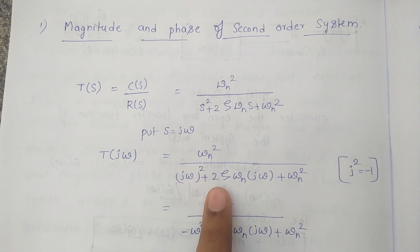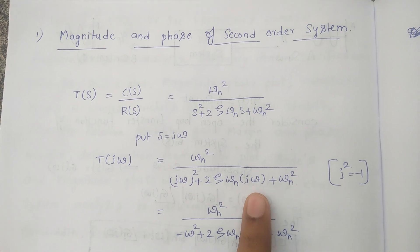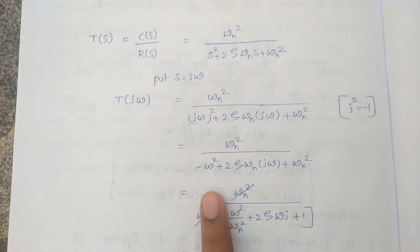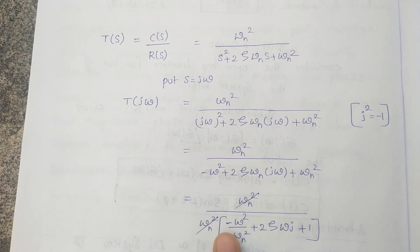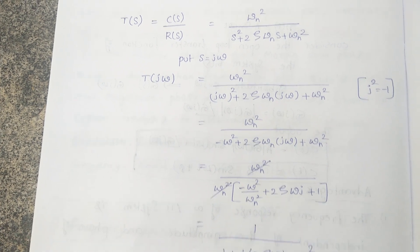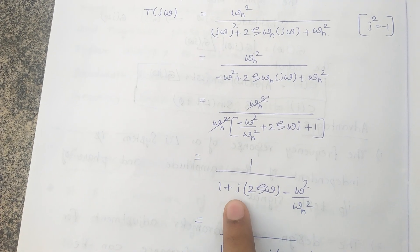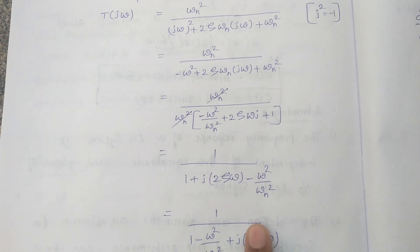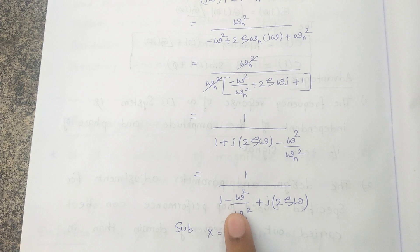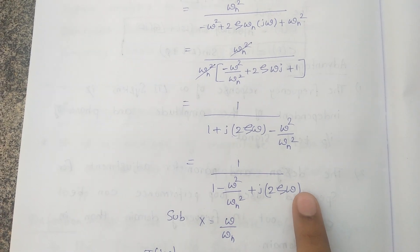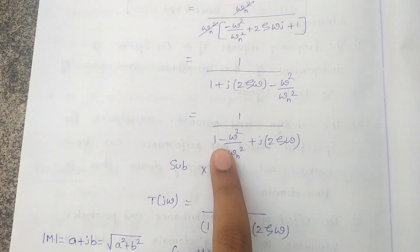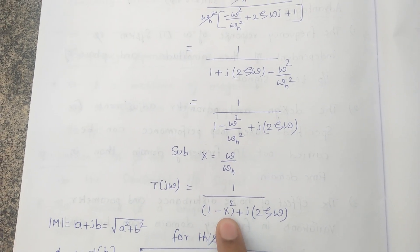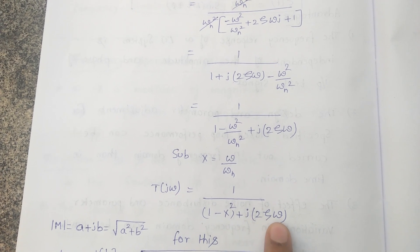Substituting s = jω: ωn² / ((jω)² + 2ζωn·jω + ωn²). We know that j² = −1, so substitute −1 in place of j². Taking ωn² as common, we get 1 / (1 + j(2ζω − ω²/ωn²)). On replacing and substituting ω/ωn = h, T(jω) = 1 / (1 − h² + j·2ζh).